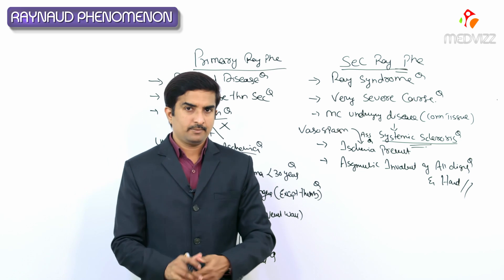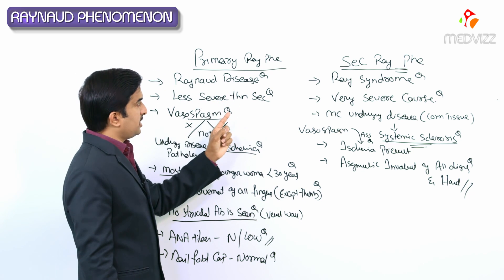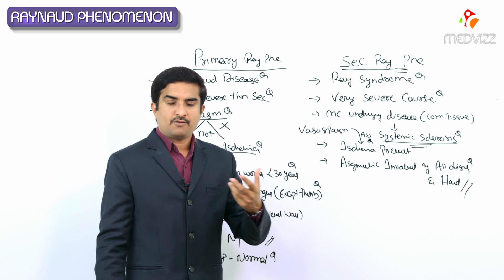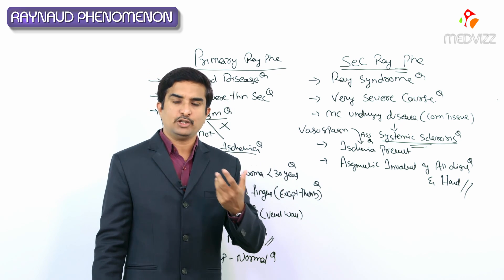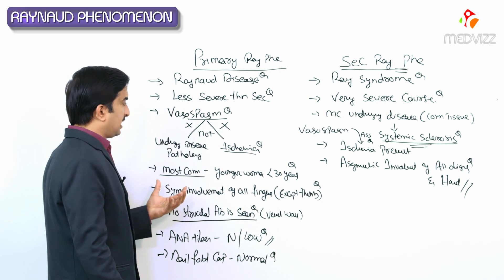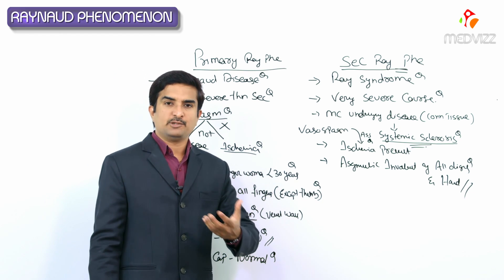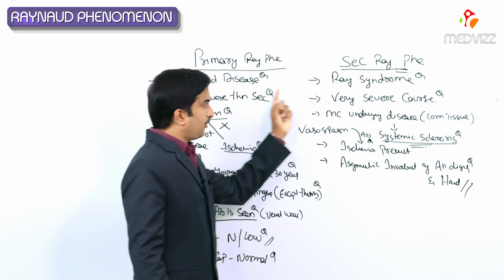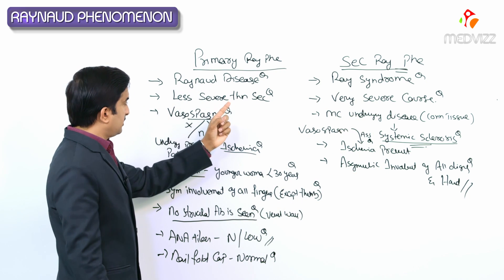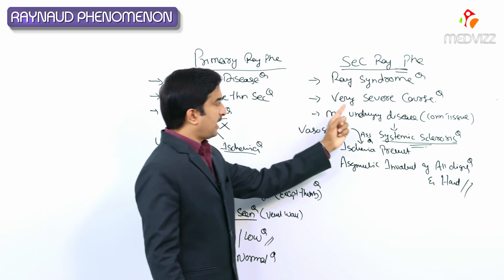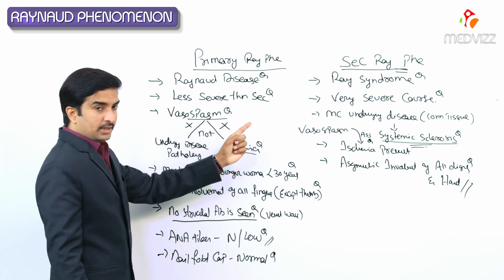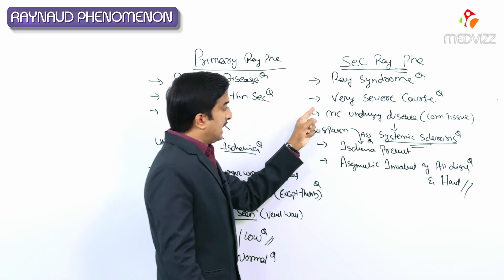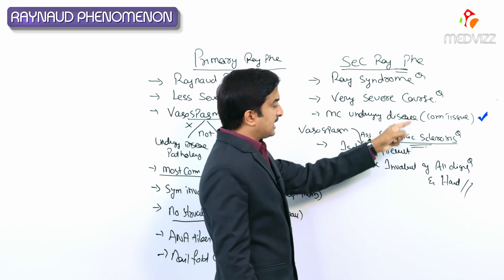Quick review: Raynaud's phenomena is mainly due to intermittent arteriolar vasoconstriction — vasospasm of the arteries or arterioles of the digits — responsible for pain, pallor, cyanosis, and hyperemia. Based on underlying pathology and clinical manifestations, it is categorized as primary (Raynaud's disease) and secondary (Raynaud's syndrome). Primary has a less severe course; in primary, vasospasm is not associated with underlying pathology or concurrent ischemia.